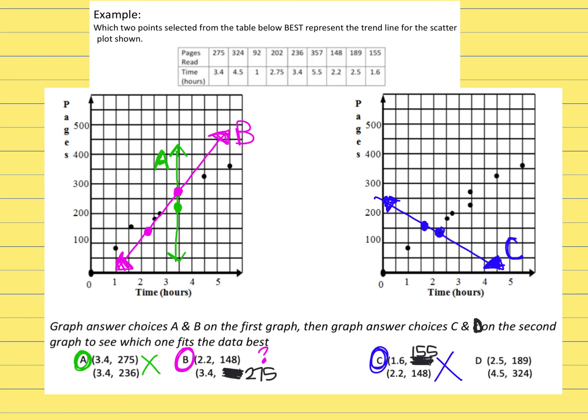Then answer choice D. Again, I'm going to choose a different color, but if you guys want to keep repeating, you can. The first point is 2.5 and 198. So go over to 2.5 up to 198 would be this dot. So I'm going to color over it.